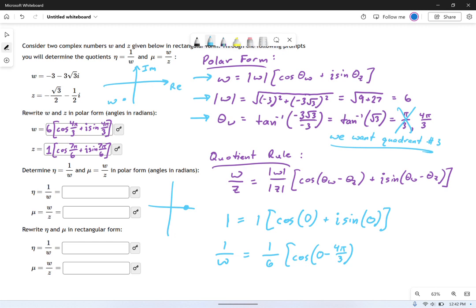So it's the angle of the real number one minus the angle of W. And then we do the same thing for I sine. Okay, zero minus four pi over three. So this is how you do one over W using the quotient formula.